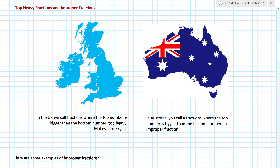Have you wondered about how language confuses us? In the UK, fractions where the top number is bigger than the bottom number are called 'top heavy' — which sort of makes sense. If I have the fraction five over four, the bigger number is on top, so the top is heavy and it's going to fall over. But in Australia, you call a fraction where the top number is bigger than the bottom number an improper fraction. Depending on where you're watching this, just know that in the UK they call them top heavy, and here in Australia we call them improper fractions.